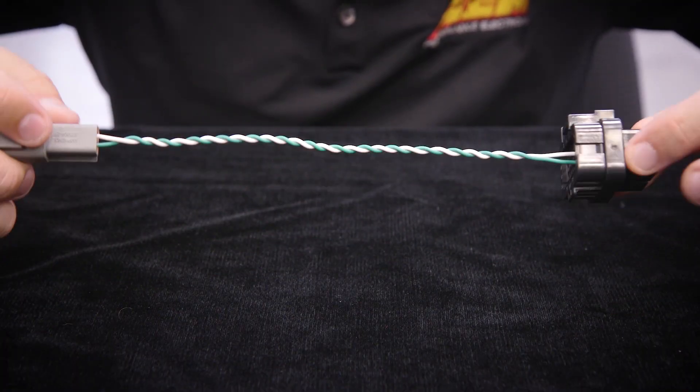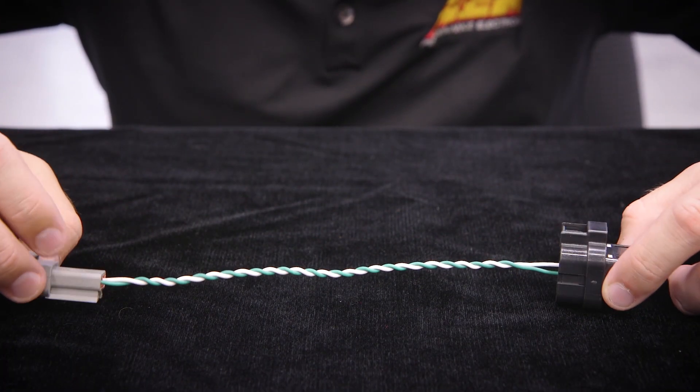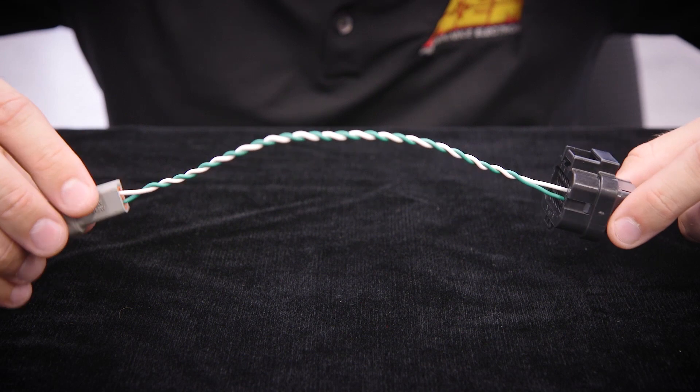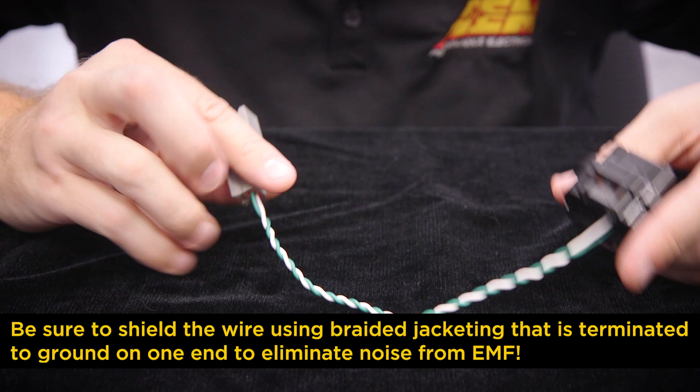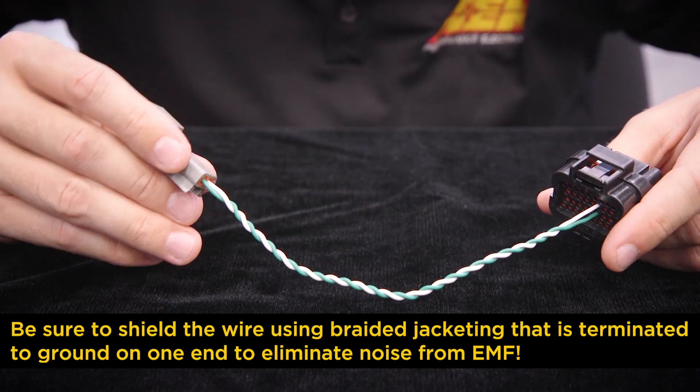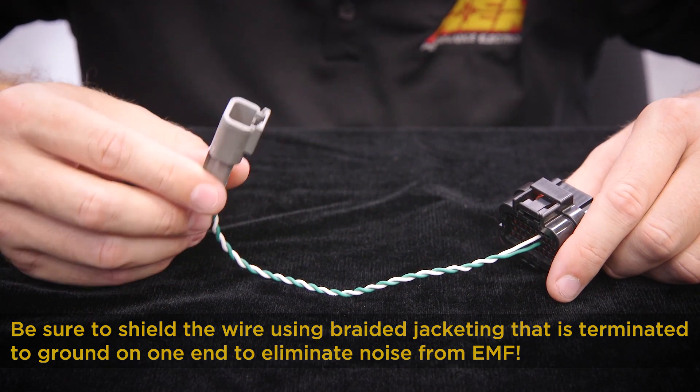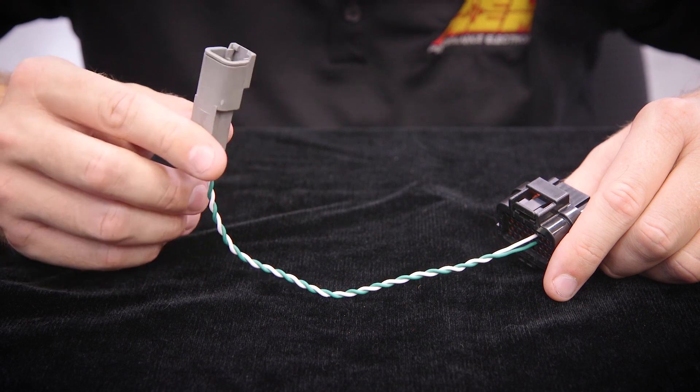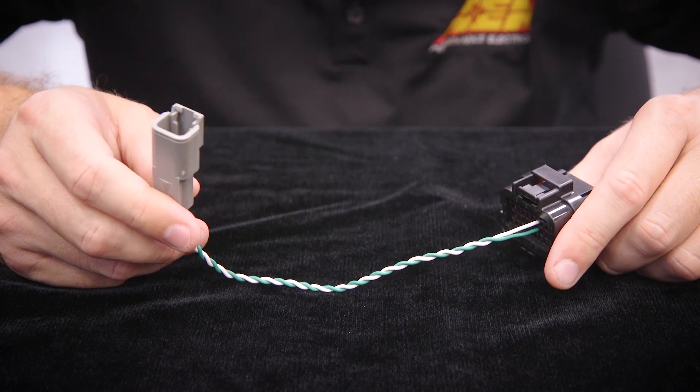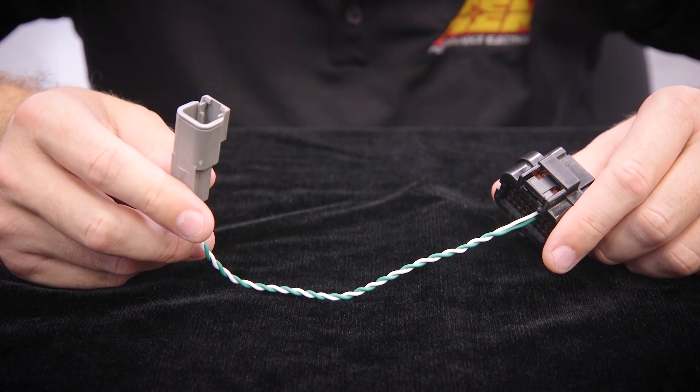Anytime you're doing any CAN wiring on any vehicle you want to make sure that you twist your wire a minimum of one twist per inch. So now that we've got this wired into our Adaptronic ECU connector we're going to go ahead and plug this side into our CAN2 connector on our dash. Upload the configuration into the dash and we're all set.